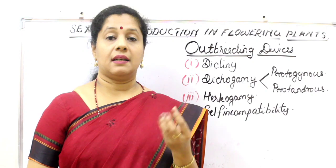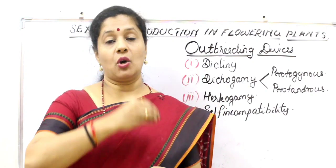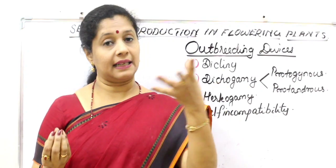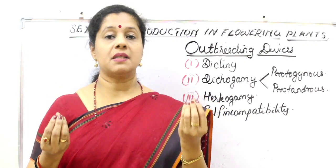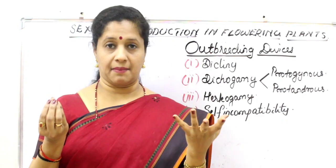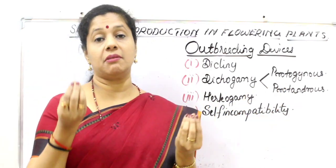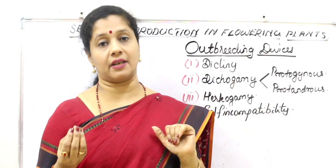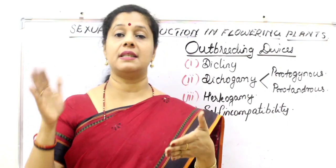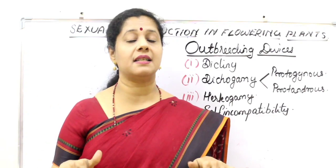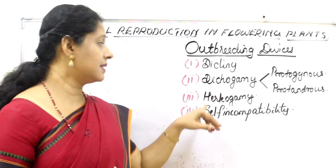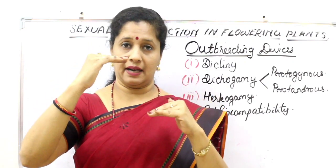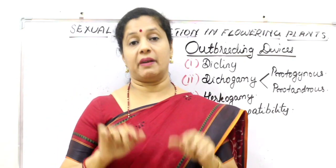The second is dichogamy: the anthers mature and dehisce, releasing pollen grains, but the stigma also has a receptivity window — these two should be synchronized. Sometimes the gynoecium is ready first but pollen is not yet released — that is called protogyny. Sometimes the anther releases pollen but the gynoecium is not yet receptive — that is called protandry. If there is no synchronization between pollen release and stigma receptivity, self-pollination cannot happen. The third is hercogamy: even in a bisexual flower, if the stigma and anther are positioned at different levels, the chance of pollen falling on the stigma is less — another way of preventing self-pollination.